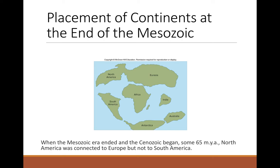This is why, for example, we find proto-lemurs in New Mexico — because North America was much warmer, much wetter, and the continents weren't nearly as far apart. When you think about the distance between South America and Africa today, it seems impossible for New World monkeys to have crossed. But at the time monkeys were moving into South America, it wasn't quite as far a leap — still an ocean crossing, but one you could more realistically imagine, like a downed tree floating across.